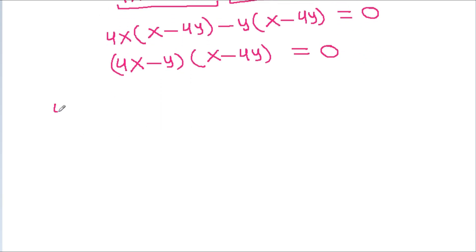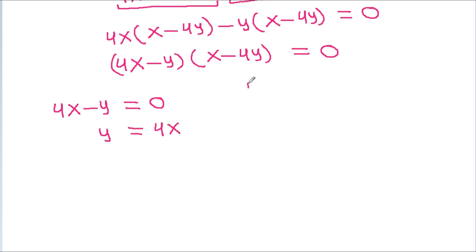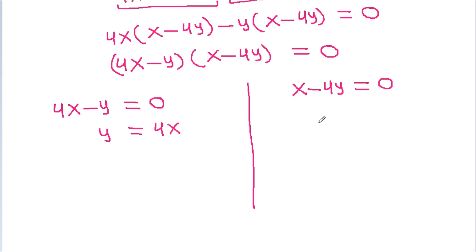So either 4x - y equals 0, which means y equals 4x, or x - 4y equals 0, which means x equals 4y.